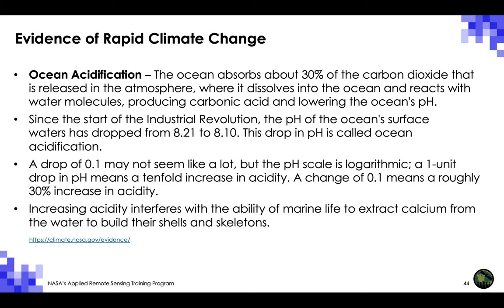The ocean absorbs about 30% of the carbon dioxide released in the atmosphere, where it dissolves and reacts with water molecules, producing carbonic acid and lowering the ocean's pH. Since the start of the Industrial Revolution, the pH of the ocean's surface waters has dropped from 8.21 to 8.1 — a process called ocean acidification. The pH scale is logarithmic, so a drop of 0.1 means a roughly 30% increase in acidity. Increasing acidity interferes with the ability of marine life to extract calcium from the water to build their shells and skeletons.